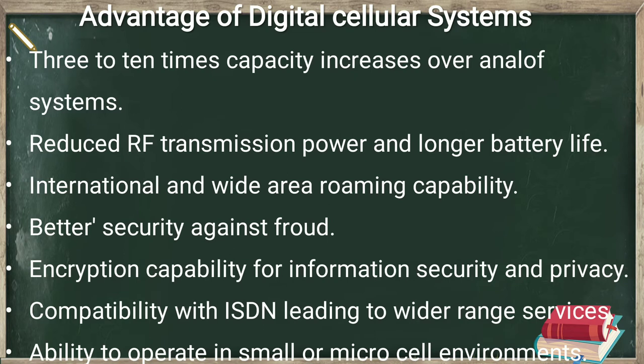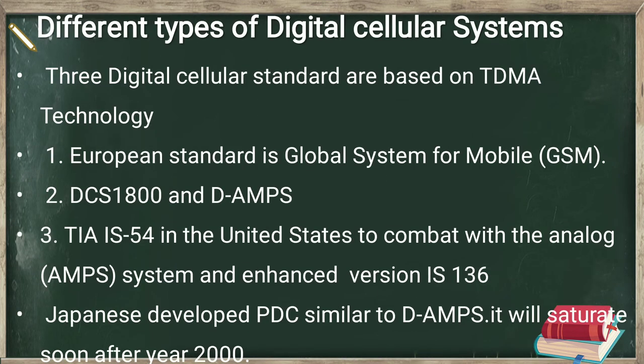That's why scientists, operators, and communication systems moved from analog to digital. The advantages of digital cellular systems include: cellular system capacity increases 3 to 10 times, reduced RF transmission power and longer battery life, international and wide area roaming capability, better security against fraud, encryption capability for information security and privacy, compatibility with ISDN leading to a wider range of services, and ability to operate in small and micro cell environments. That's why all next generations from 2G onwards are based on digital cellular systems.